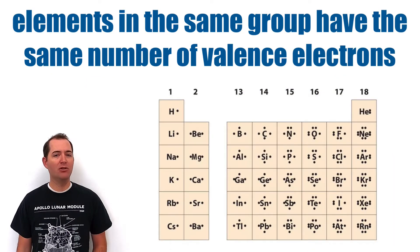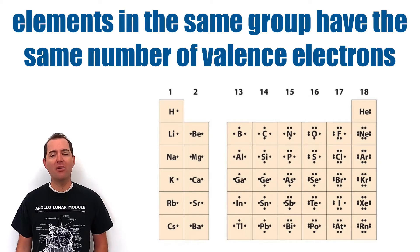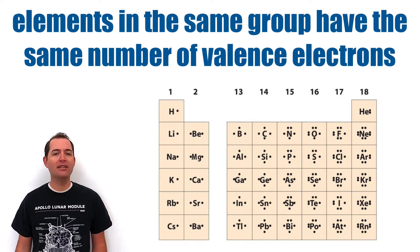Elements in the same group of the periodic table will have the same number of valence electrons, which makes them have similar looking Lewis dot structures.